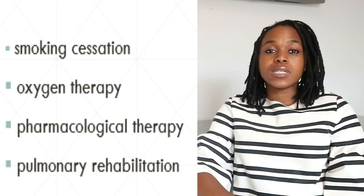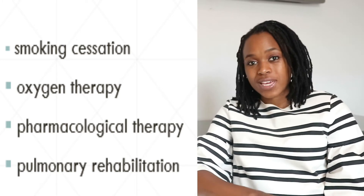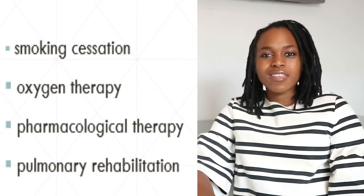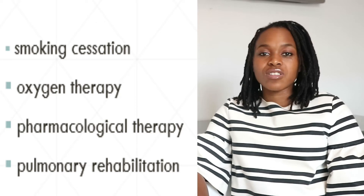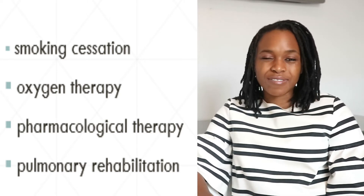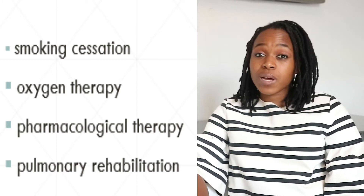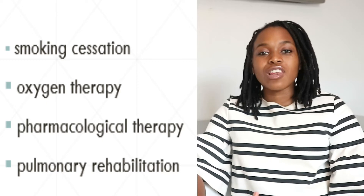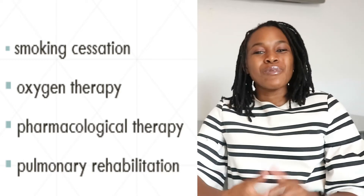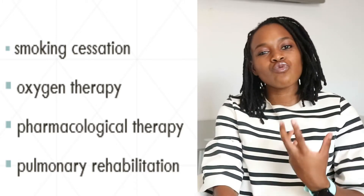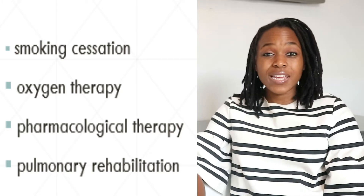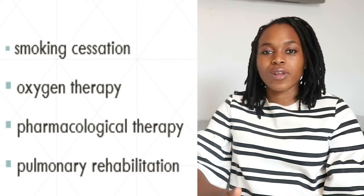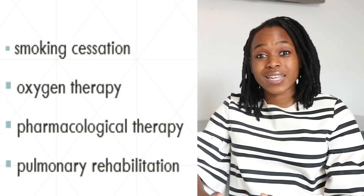For management, the first thing you can do is quit smoking — this includes secondhand smoke, as inhaling smoke from someone else is just as bad. You're also likely to get oxygen therapy, which helps get more oxygen into the system and makes life easier. You may be prescribed medication by your doctor to open up the airways and reduce inflammation. Lastly, pulmonary therapy retrains you how to breathe more efficiently, increase activity levels, and remain physically independent.